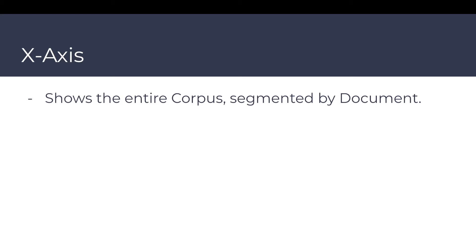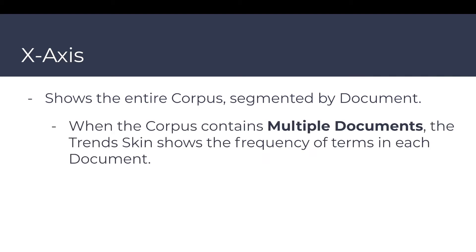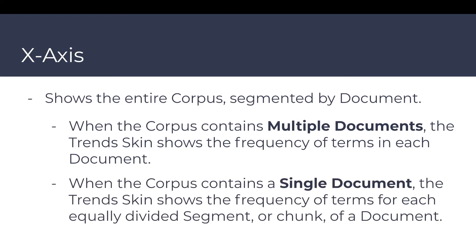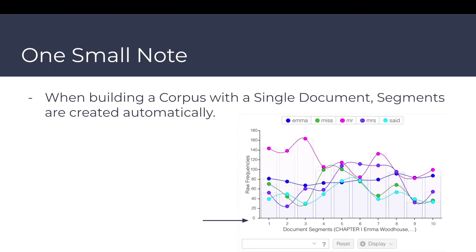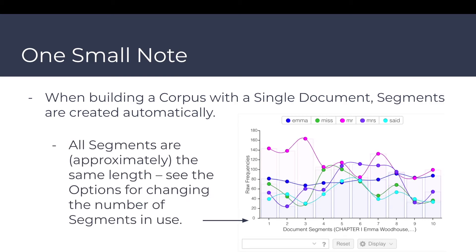The x-axis of the trends graph shows the entire corpus segmented by document. When the corpus contains multiple documents, the Trends skin shows the frequency of terms in each document. When the corpus contains a single document, it shows the frequency of terms for each equally divided segment, or chunk, of that document. When building a corpus with a single document, segments are created automatically and are approximately the same length. See the options for changing the number of segments in use.